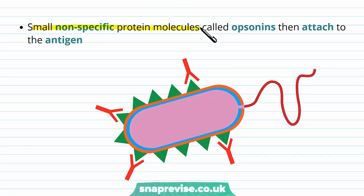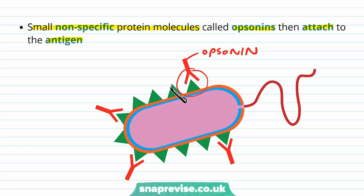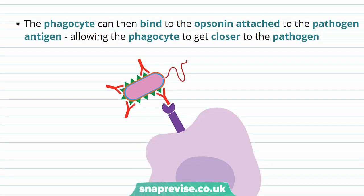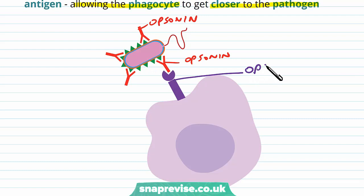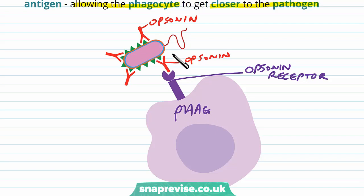At this point, small non-specific protein molecules called opsonins attach to these antigens. Opsonin molecules bind to the antigen because they have a specific complementary binding shape, attaching to the antigen at various points on the pathogen. When the opsonin is bound to the pathogen, the phagocyte is allowed to bind to the attached opsonin, allowing the phagocyte to get very close to the pathogen to start carrying out phagocytosis. Usually opsonins are just floating around not bound to anything, but if they bind to the pathogen they cluster together, and the phagocyte recognizes that they're attacking something and therefore there's a problem.